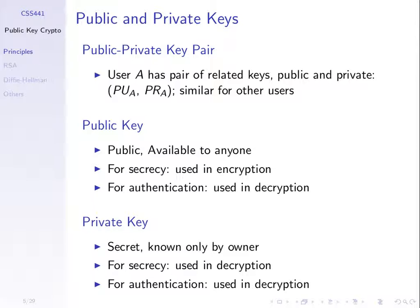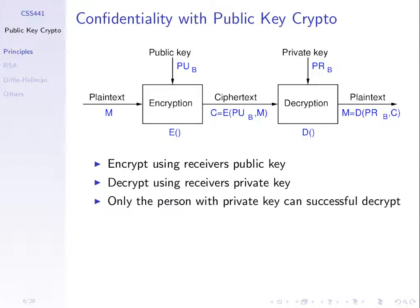If you want to send a secret message to me, what key do you encrypt with? My public key — the receiver's public key. For confidentiality, take your message, encrypt with the public key of the destination, PUB. Then the only person who can decrypt is the person that has the corresponding private key, which should be B. Only B has PRB, so B decrypts. Therefore the only person who can see the contents of this message is B — that provides confidentiality.